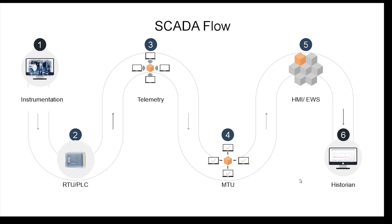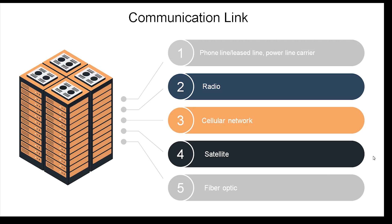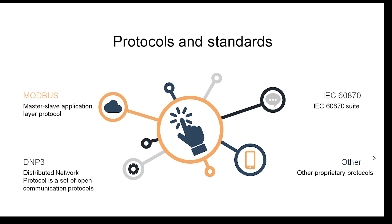To summarize: first you have instrumentation, then you can have an RTU, PLC, or DCS. In between there is telemetry — the communication layer using radio, cellular, satellite, or fiber — going from the RTU, PLC, or DCS to the MTU. The MTU connects to the HMI for visualization, the engineering workstation for programming, and the historian for storing historical data. Regarding protocols, the important ones to understand are Modbus, IEC 60870, and DNP3.